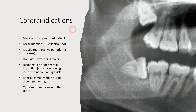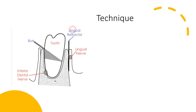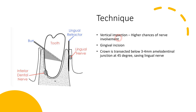Coronectomy is most commonly used for vertically impacted third molars with higher chances of nerve involvement. The technique begins with a gingival incision, followed by crown transection 3 to 4 mm below the amelodentinal junction at a 45-degree angle. As shown, the bur is placed at 45 degrees just 3 to 5 mm below the amelodentinal junction to protect the lingual nerve, which is present on the lingual aspect of the third molar — saving this important nerve is the rationale for the angled approach.